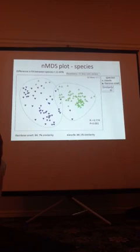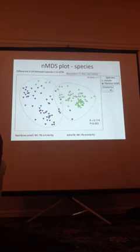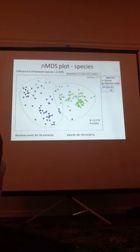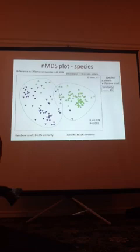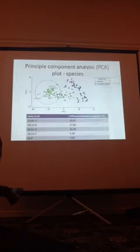If we look at the fatty acid signatures using an nMDS plot looking at two species, we get a pretty good grouping. The green circles on the outside are contours at 80% similarity. Looking at the species — rainbow smelt in blue and alewife in green — you can see that rainbow smelt were found to be about 85% similar to each other in their fatty acid signatures, and alewife about 88%. There was about a 23% difference between fatty acid signatures of those two species, which is what we're looking for as we move forward with the study examining trophic interactions.